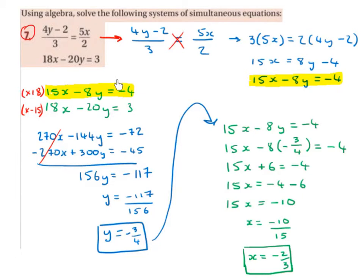So I'm going to write that down over here. I don't need to rewrite this equation because it's grand as it is. We've got x's and y's on the left, and constants on the right. So we've got 18x minus 20y equals 3.